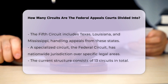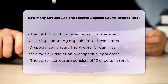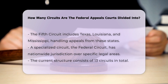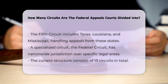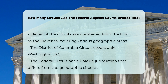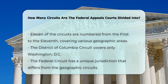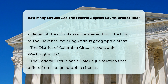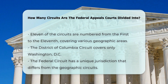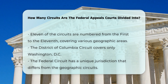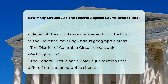In addition to the geographic circuits, there is also a specialized circuit known as the Federal Circuit, which has nationwide jurisdiction over specific areas of law, such as patents and certain administrative agency decisions. The current structure includes a total of 13 circuits, with 11 of these circuits being numbered from the 1st to the 11th, covering different geographic areas of the United States. The District of Columbia Circuit covers only Washington, D.C., and the Federal Circuit has a unique nationwide jurisdiction.